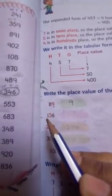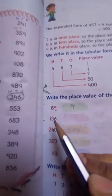Now, coming on to this part. It's 136. Now, you have to tell the place value of this 3.